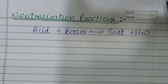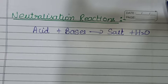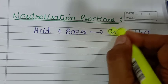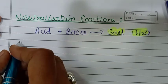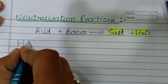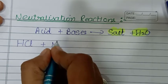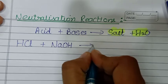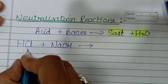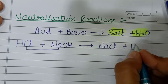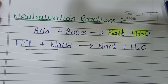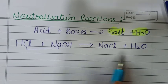So acid and base react; products are salt and water — this is a neutralization reaction. For example, take acid HCl and base sodium hydroxide NaOH. Interchange the ions: sodium pairs with chlorine to give NaCl, plus water. Acid plus base gives salt plus water.